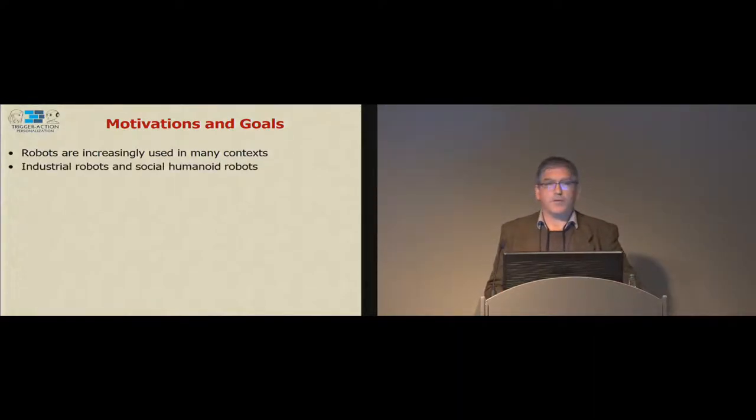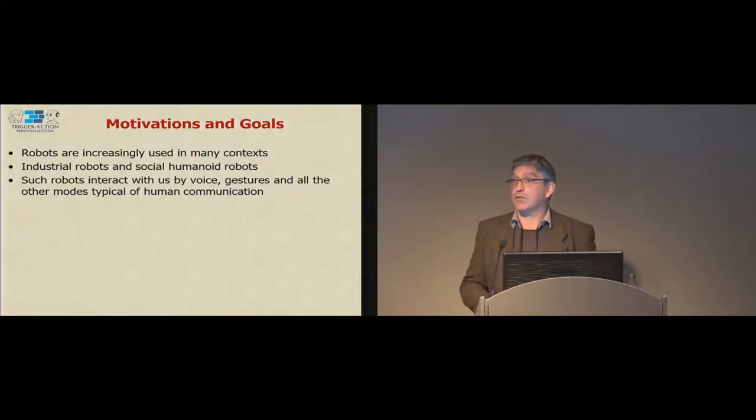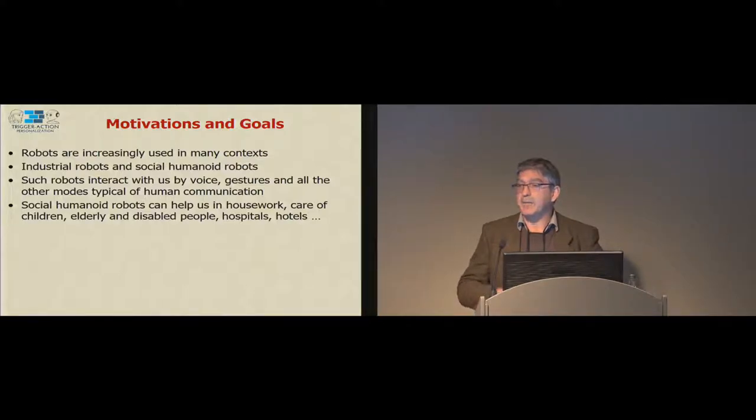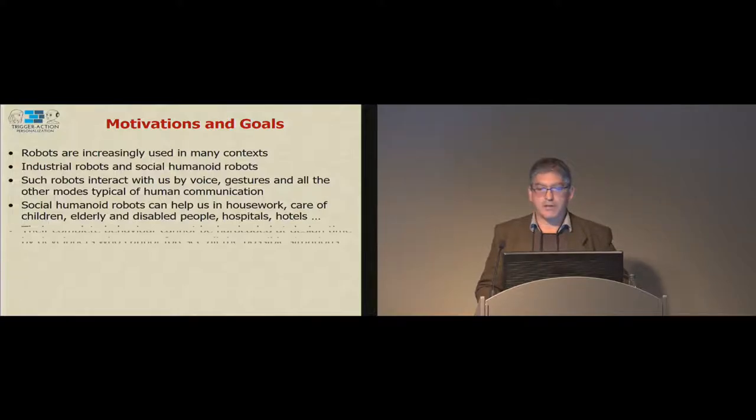We all see that robots are increasingly used in many types of contexts. Robot is a quite general term, so we need to distinguish a little bit. There are industrial robots, which usually are used in a specific context for doing specific tasks such as picking an object and moving it somewhere. And social humanoid robots, which have this feature to be able to interact by using human-like modalities.